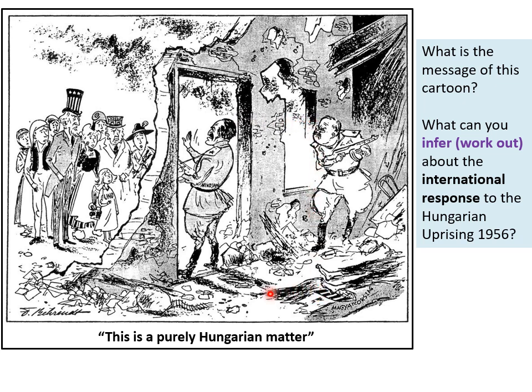Right at the bottom you've got what you might recognise as the Hungarian flag. That word is Hungarian for 'Hungary,' with a dead body on top of it. So clearly the message of this cartoon is that the international community — including Britain, America and the UN — are completely helpless or at least completely unwilling to help the Hungarians during the uprising. And as we go through this, you'll see that this is very accurate in terms of what Britain, America and the UN actually did.